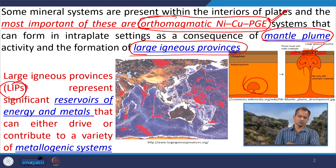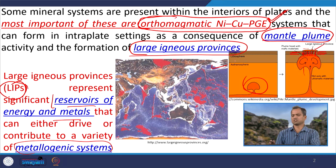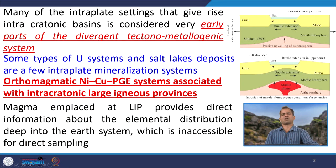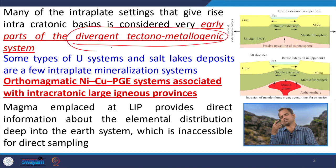Large igneous provinces are very good reservoirs of energy and metals and are very important contributors to the metallogenic system or metal extraction. In this figure you can see the global distribution of large igneous provinces. In the Indian context, we have the Deccan basalt — it is the continental flood basalt magmatism. In the ocean surface also we have different large igneous bodies submerged. Many of these intraplate settings and intracratonic basins are considered to be part of the divergent tectonic system.